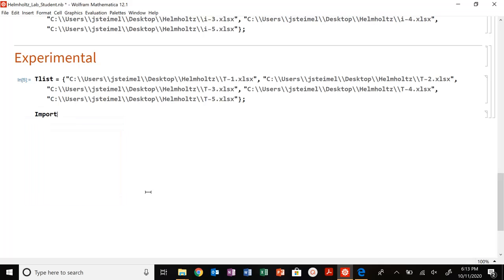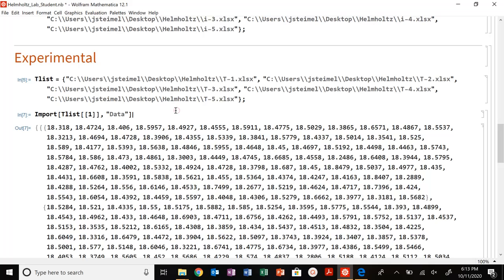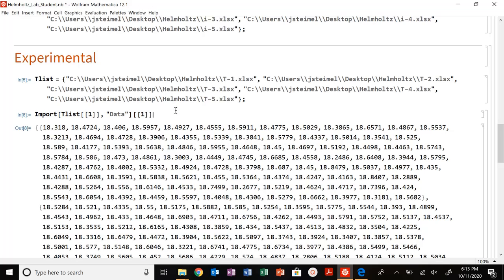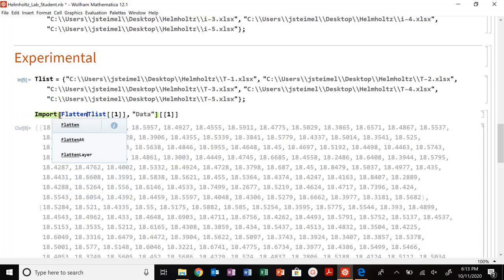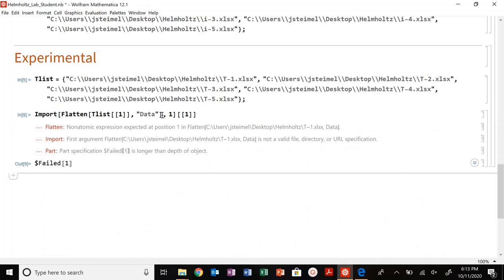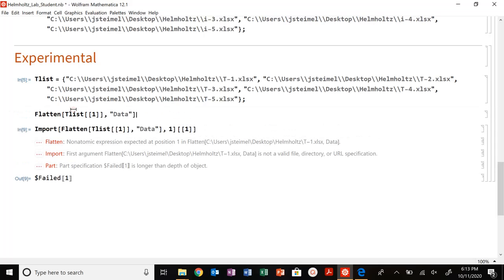So I'm going to import T list one data. Let's pull out the first data set. Actually, let's actually pull you down. Let's flatten. It has that extra parentheses and I don't want to deal with that. We need to flatten after the import.